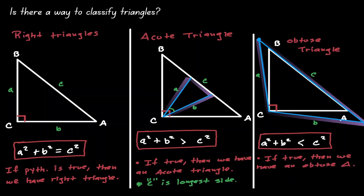In the labeling of the sides of the triangle, C is still considered the longest. So now we have a tool to identify whether we have a right triangle, an acute triangle, or an obtuse triangle. If the Pythagorean Theorem is true — A squared plus B squared equals C squared — then we have a right triangle. If A squared plus B squared is greater than C squared, then we have an acute triangle. And if A squared plus B squared is less than C squared, then we have an obtuse triangle.